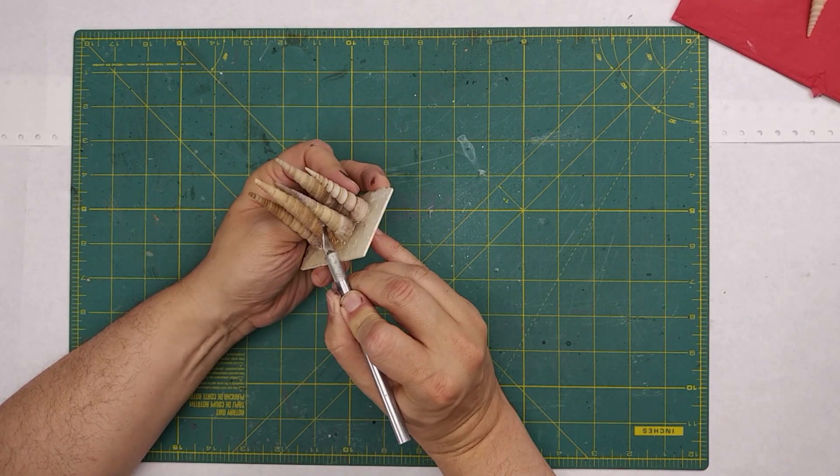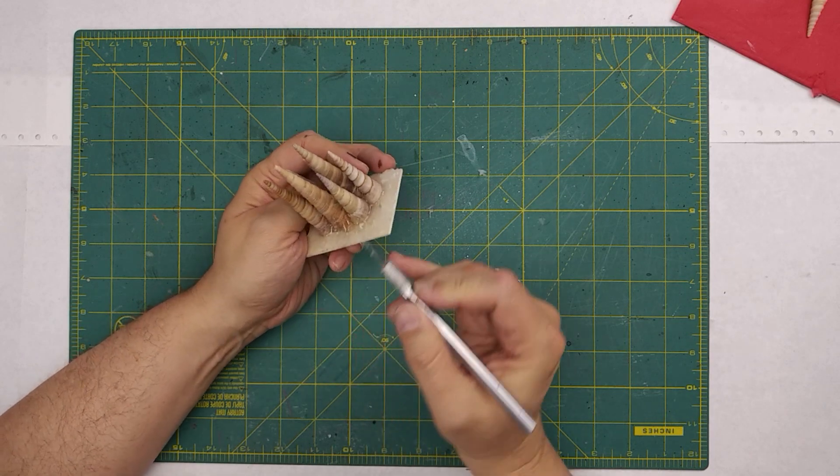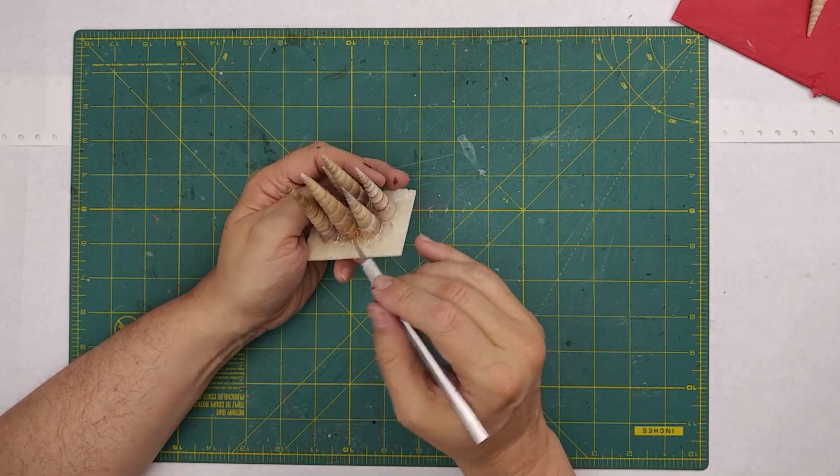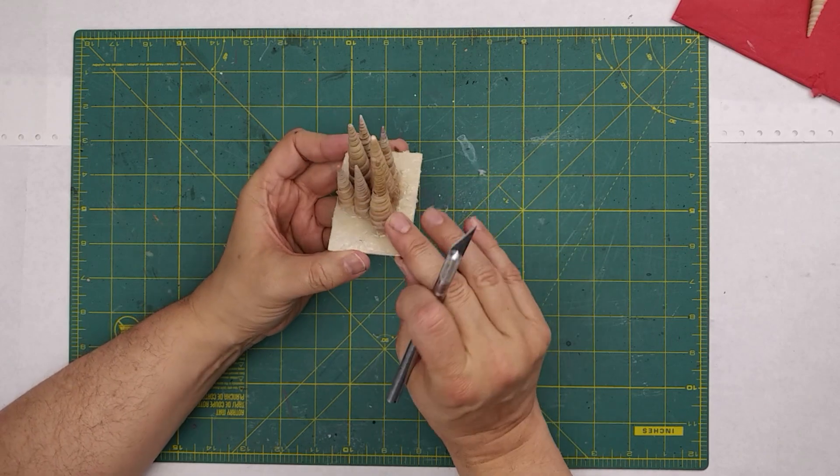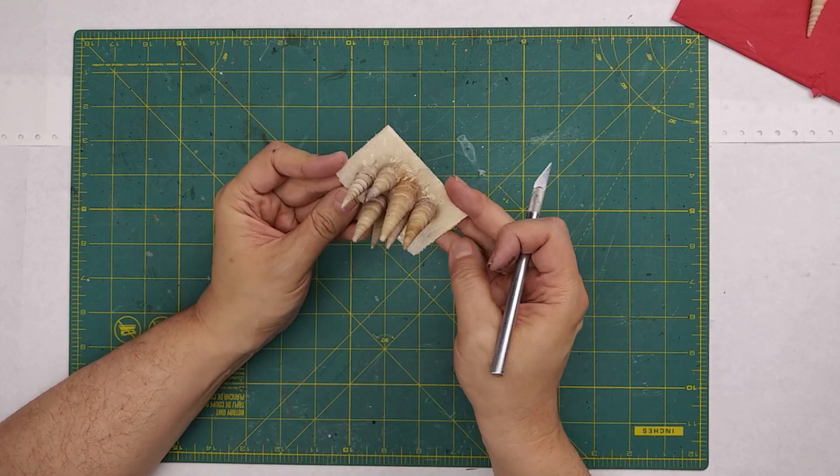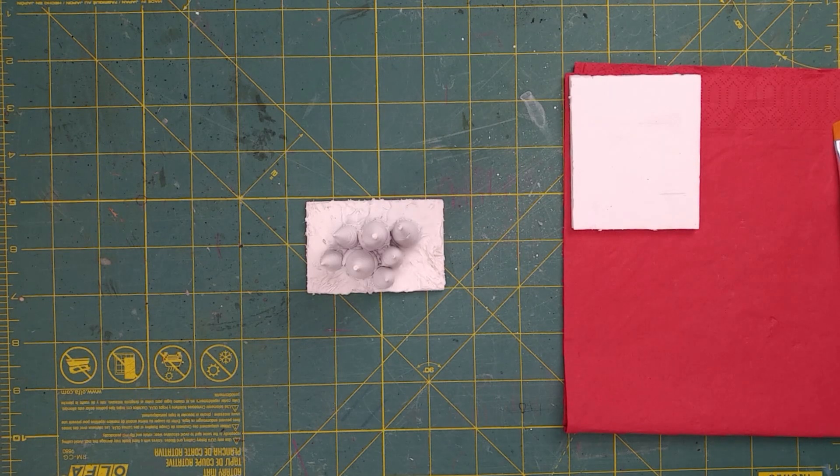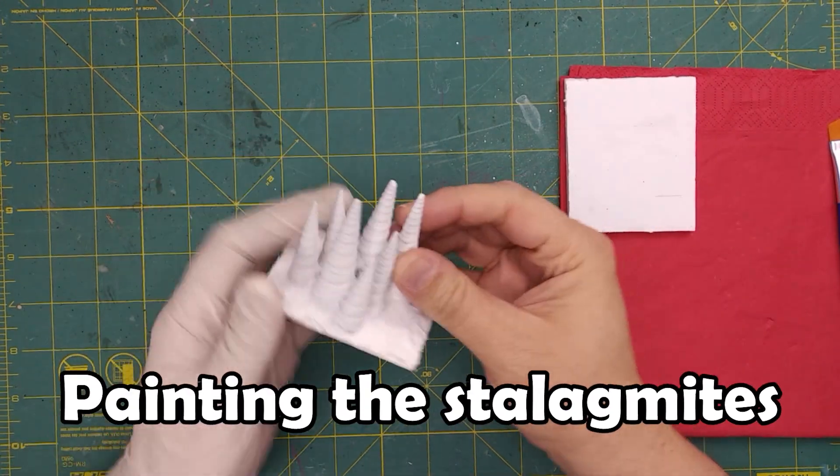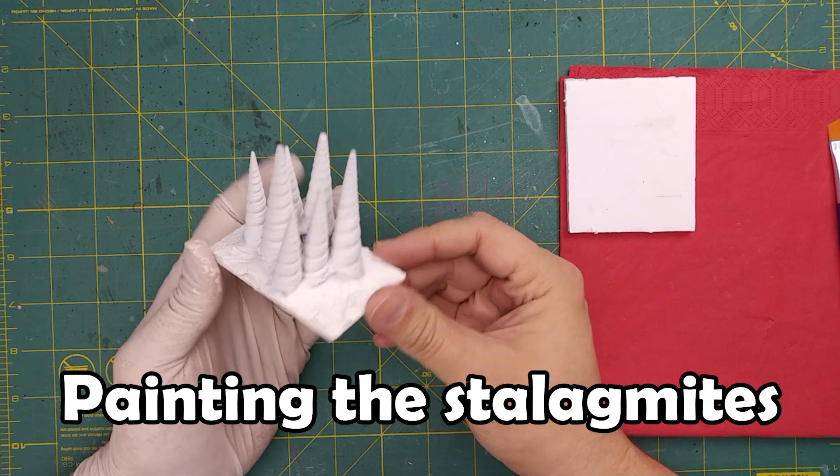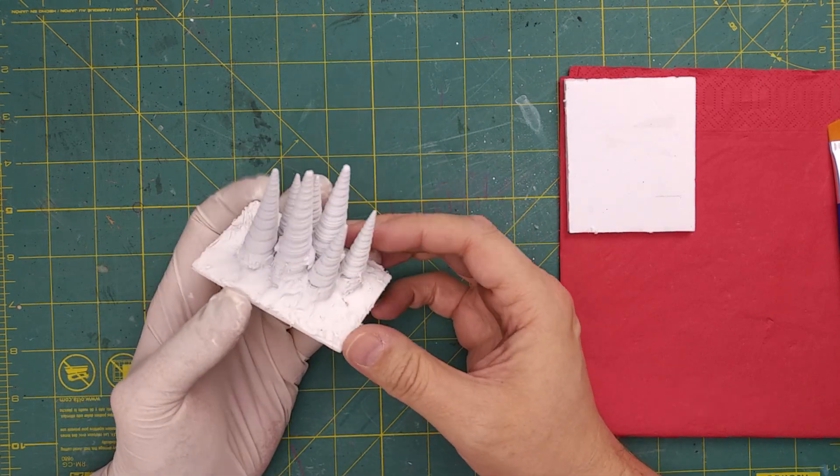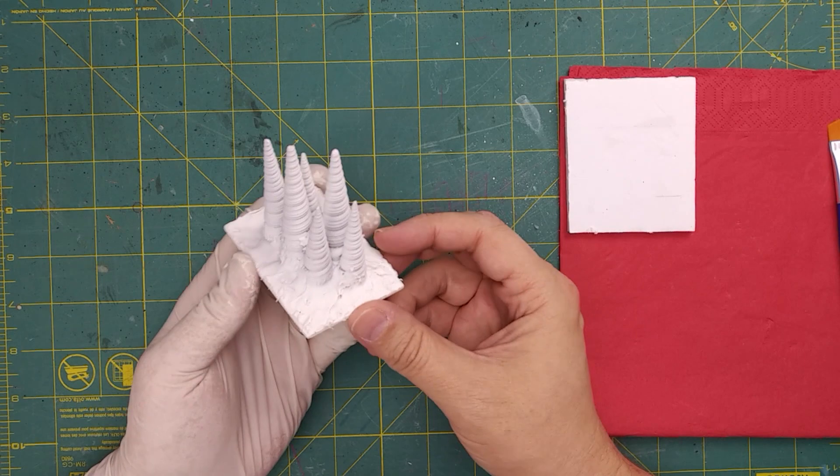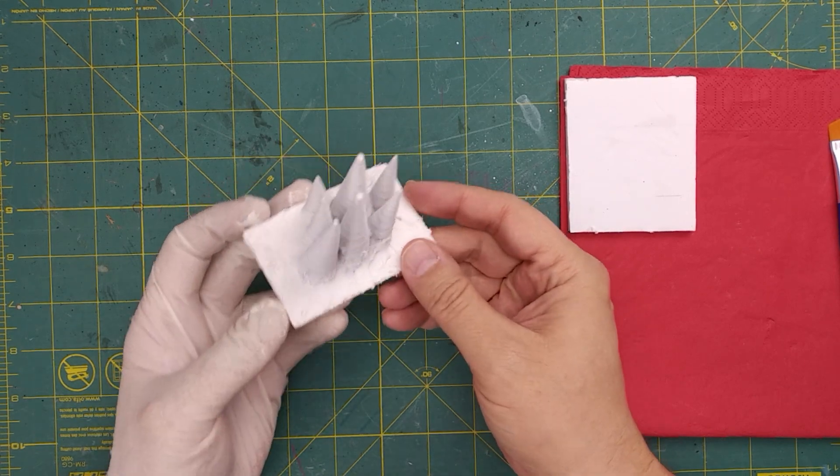These little clumps in here drive me crazy, so I want to get those out of there. Now that we have our base coat of our icy stalagmites done, we can use some dollar store craft paint.